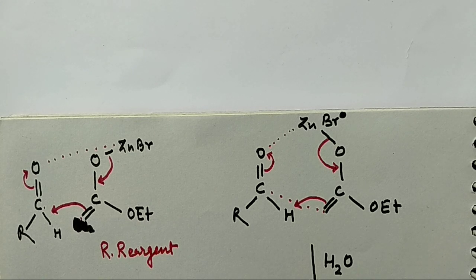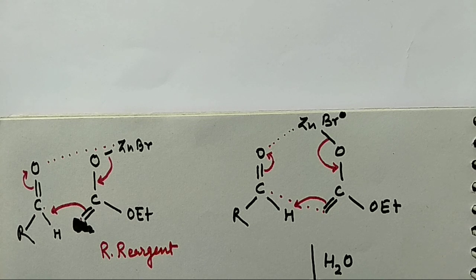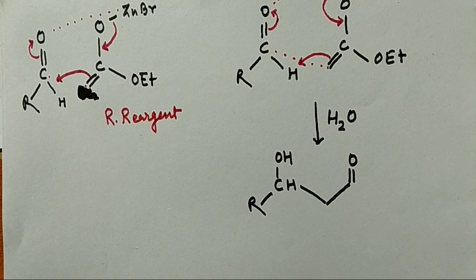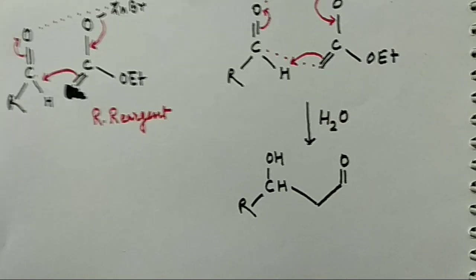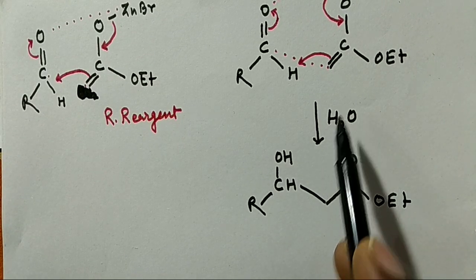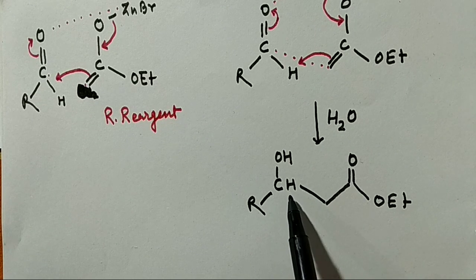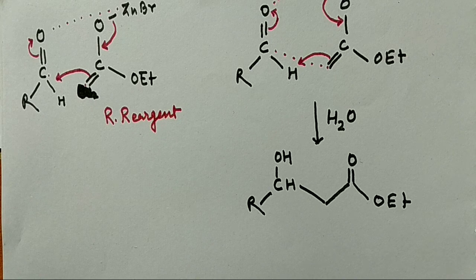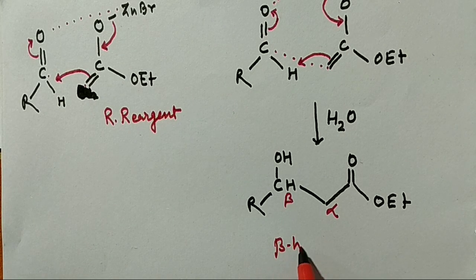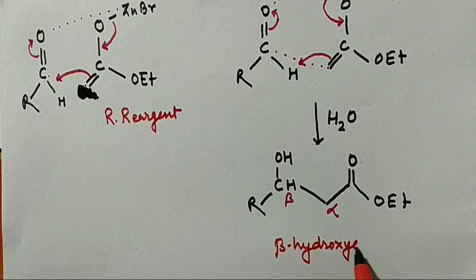Upon hydrolysis, we obtain a structure with C–OH, R, H, then CH₂, C double bond O, and OEt. This is the beta-hydroxyester. The carbon bearing the OH is the beta carbon and the adjacent carbon bearing the ester is the alpha position. This is the final product — beta-hydroxyester.